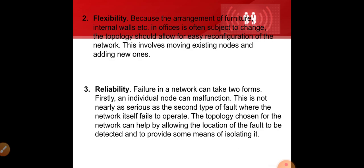The third factor is reliability. Failure in the network can take two forms. Firstly, an individual node can malfunction — it should be reliable and trustworthy. This is not nearly as serious as the second type of fault where the network itself fails. If one system has an error that's manageable, but if the whole network topology is wrong, it can affect all connected work. The topology chosen should help detect the location of a fault and provide some means of isolating it, so we can easily find and address where the problem is.